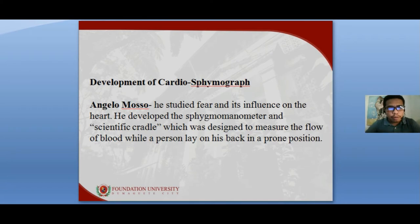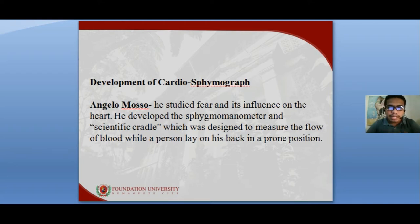There are four major parts of the polygraph machine. These four major parts are the cardiospimograph, the pneumograph, the galvanograph, and the chemograph. We will be discussing the various individuals who contributed to the development of these major parts of the polygraph machine.